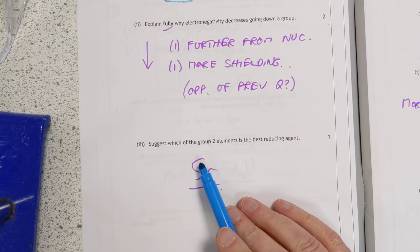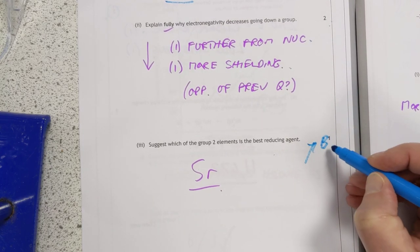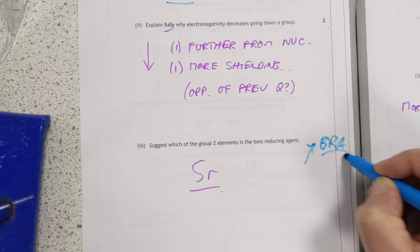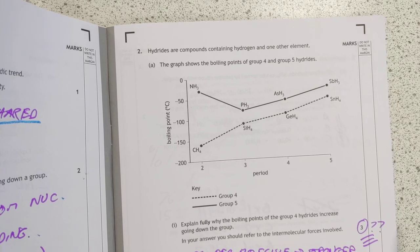Which seems to be just the opposite of the previous question. Fine if you know your stuff, I suppose. Relatively easy two marks. The best reducing agent, you're looking for the top right. The best reducing agent is in the top right and we're hunting for group two. Strontium is the top one. You find it in your ECS.